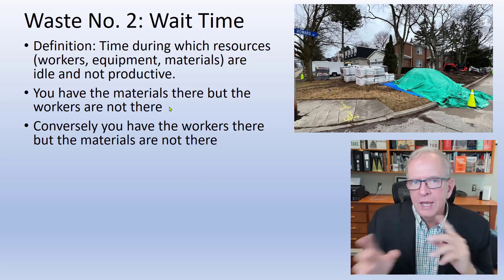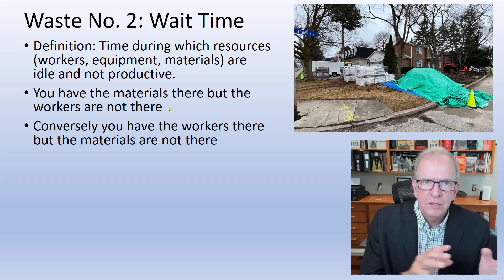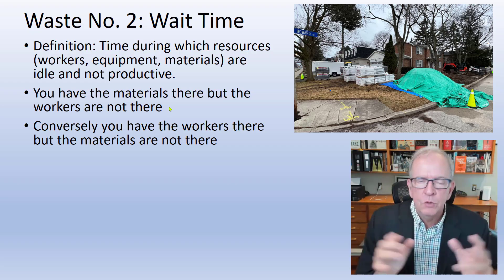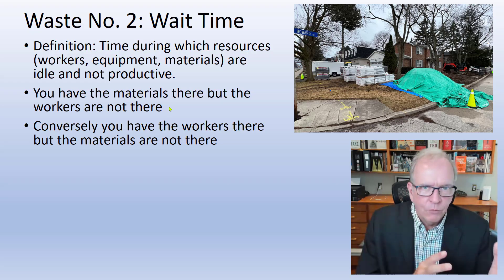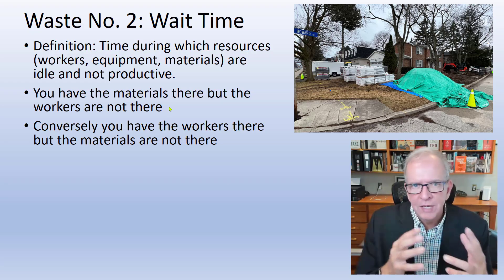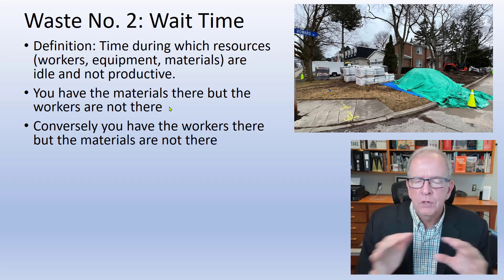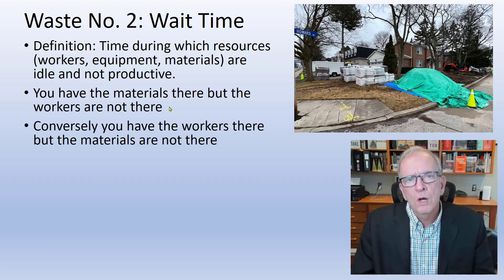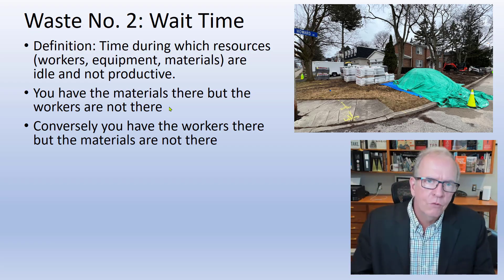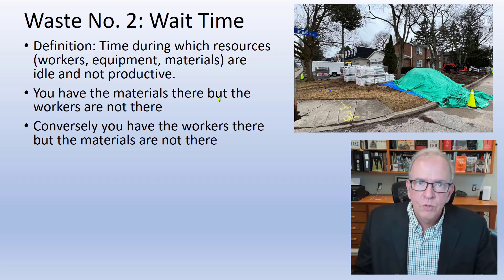The problem with trying to get everybody to work faster is that some trades will work way faster than others, creating bottlenecks or work being done ahead of when it should be, leading to a lot of rework. Those are other areas of waste that become integrated with this one. The eight areas of waste are not mutually exclusive — they crisscross each other; one causes another and so on.